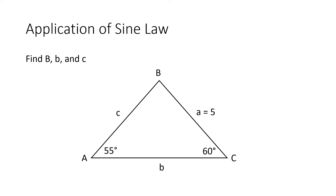So let us now apply the formula for sine law. Let's say we have triangle ABC where angle A is equal to 55 degrees and angle C is equal to 60 degrees. Among the three sides, only side A has a value of 5 units. We are asked to determine the value of angle B, the length of side B, and the length of side C. To solve for B, we cannot use sine law yet because angle B and side B are both unknown — at least one of those two must have a value.